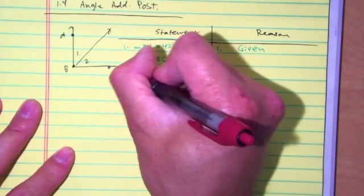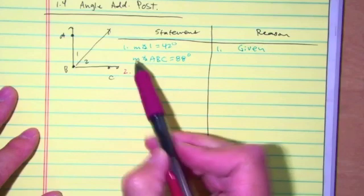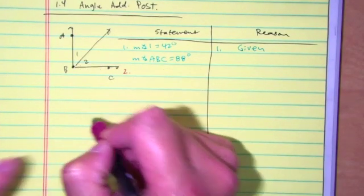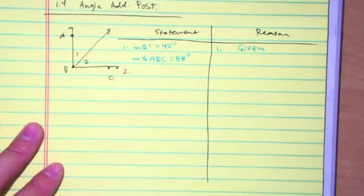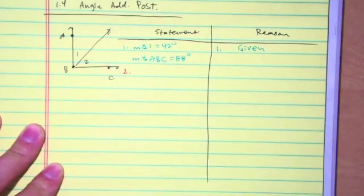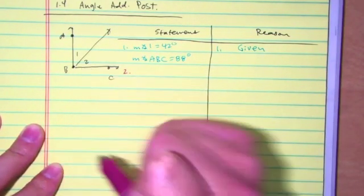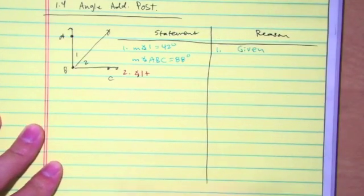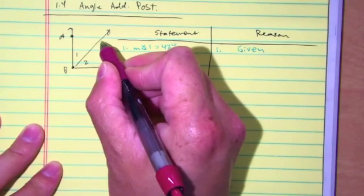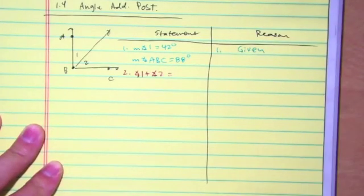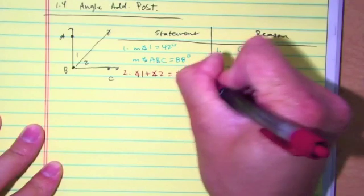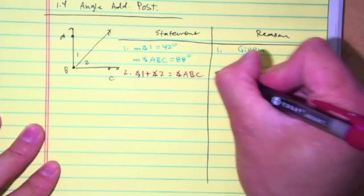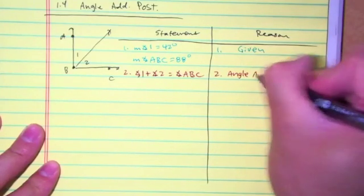The second step: I look at my picture. They give me a small angle here, the big angle, and it tells me to find the measure of angle 2. I'm going to make some kind of equation using the small angles and the big angles. Angle 1 plus angle 2 equals angle ABC. Everything here in red represents the angle addition postulate — I've added angles together to form a bigger one.